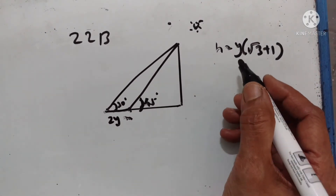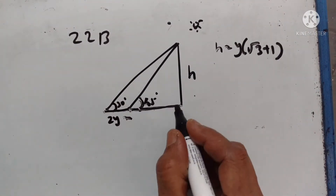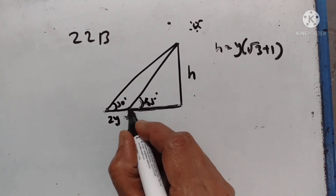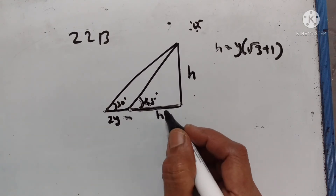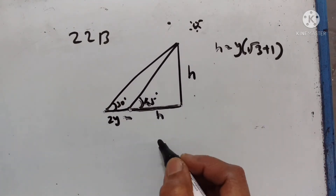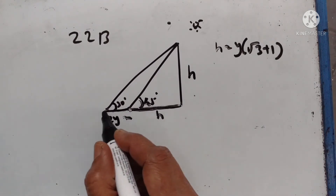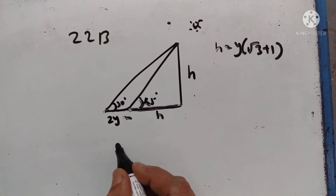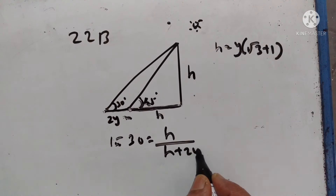Let the height be h. Therefore, the length of the shadow when the altitude is 45 degrees will also be equal to h, because tan 45 is equal to 1 — h upon h is equal to 1. Now, the length of the shadow is equal to h plus 2y. So, tan 30 is equal to h upon h plus 2y.